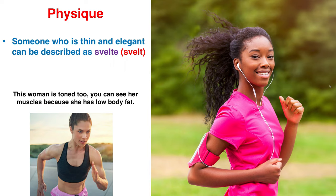Another word you can use to describe someone's physique is svelte. Someone who is svelte is thin and elegant. Looking at the woman, she looks thin and elegant — like maybe she might be a good dancer. So I think she looks svelte.